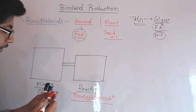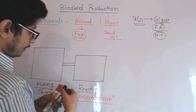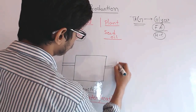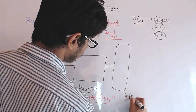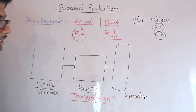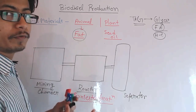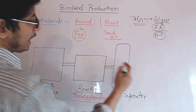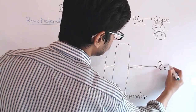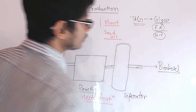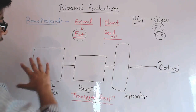The reaction chamber is where the actual reaction of making biodiesel takes place, and that is known as transesterification — the transesterification reaction. After the reaction chamber we have the separator chamber, drawn like a column. The separator is also known as the purifier, because the biodiesel produced in the reaction chamber needs to be purified. After separation is complete, we have our biodiesel ready to use.